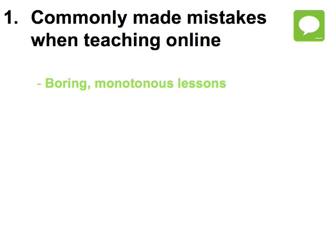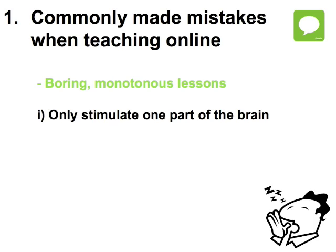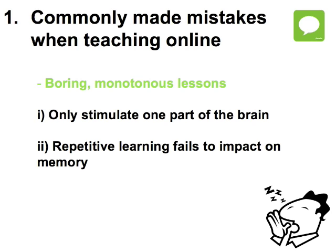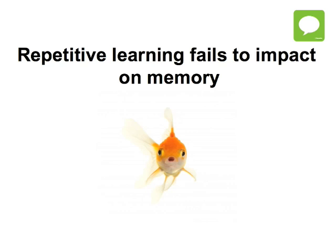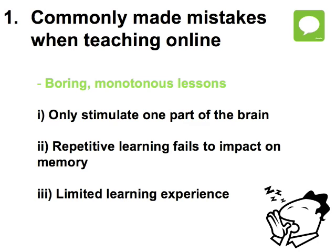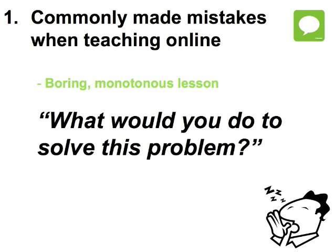Another important aspect of language learning is to bear in mind variation. Different parts of the brain are stimulated by different sorts of learning, and repetitive tasks fail to have much of an impact on the memory. The same sort of learning will only develop one area of the brain. If students are only doing one type of learning throughout the lesson, this is less likely to have an impact on their memory. What would you do to ensure this doesn't happen?